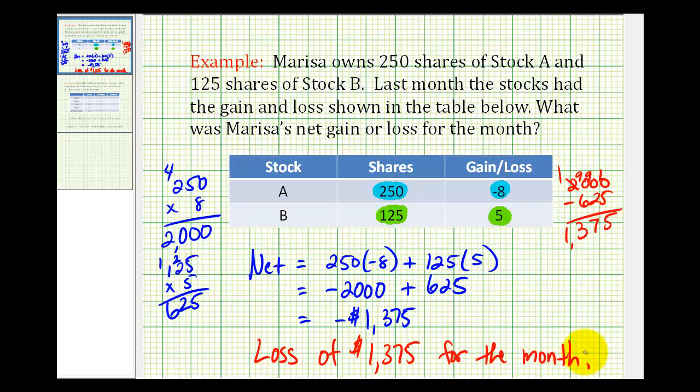Notice how when we express there's a loss we don't include the negative because a loss implies a negative. And those of you taking my class, the computer system wants us to enter the net result, which would be negative one thousand three hundred seventy-five. And since the units are already included in the problem we would not include the dollar sign. I hope you found this helpful.